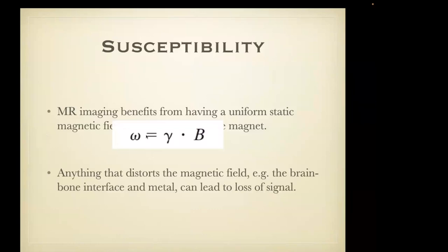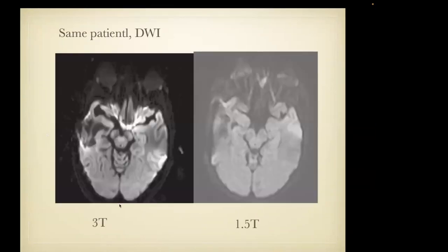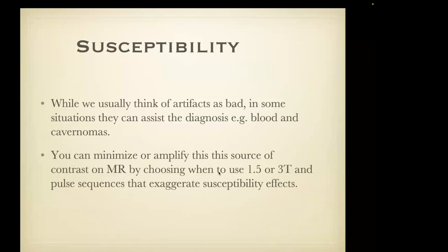If you can't see through the artifact on a fast spin echo T2 sequence — which has the least metal/susceptibility artifact — then none of the other pulse sequences will be of any benefit. Susceptibility artifacts are based on the need for a uniform static magnetic field. Remembering the Larmor equation: precessional frequency is proportional to the magnetic field. Anything that distorts the magnetic field — at the brain-bone interface and particularly with metal — will cause loss of signal. We can sometimes see things by maximizing susceptibility artifacts.